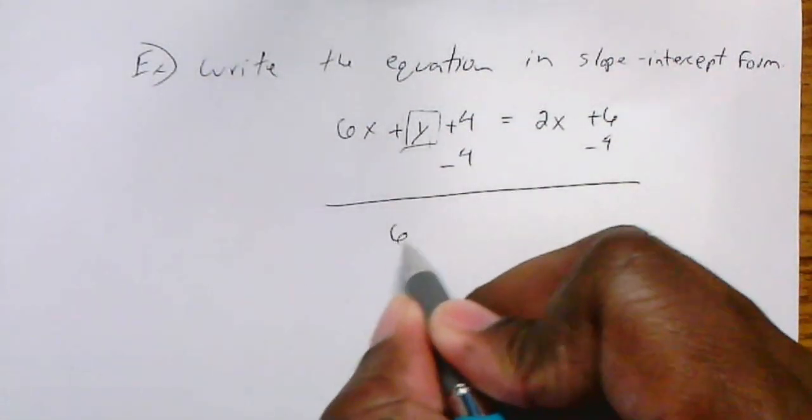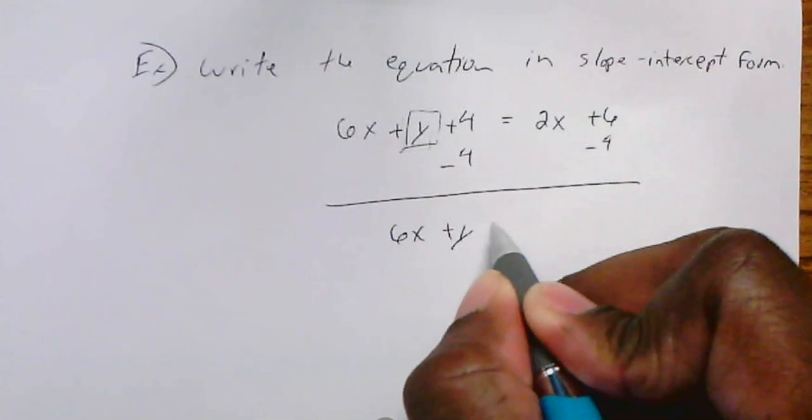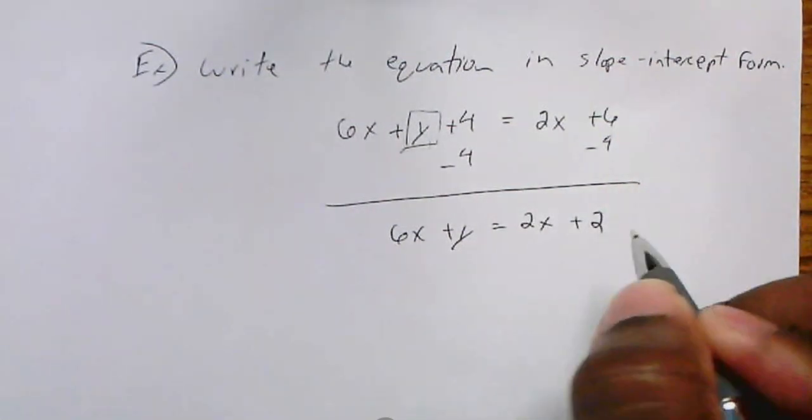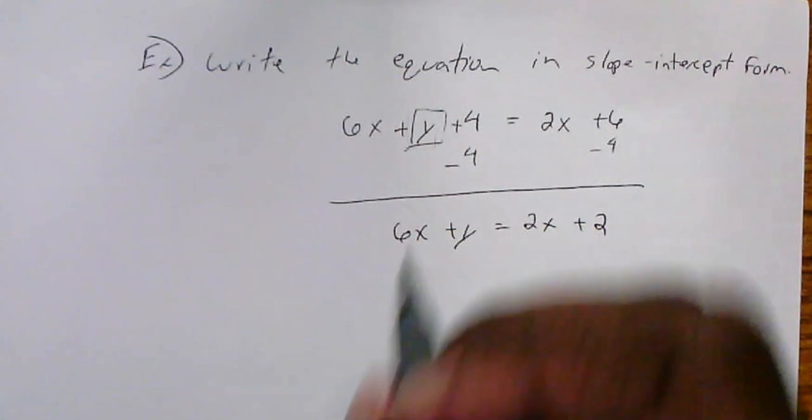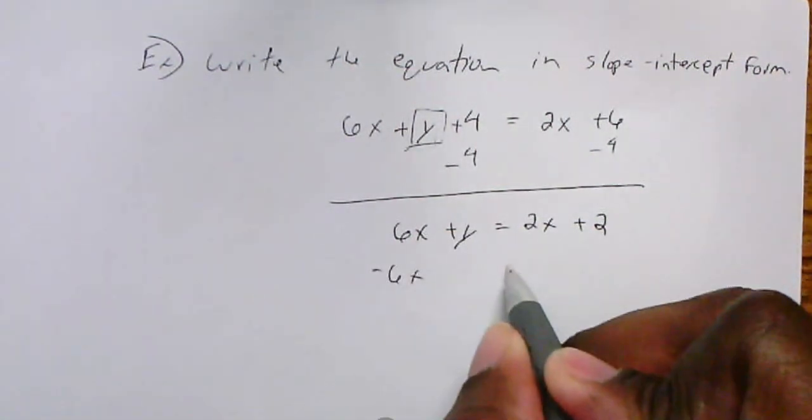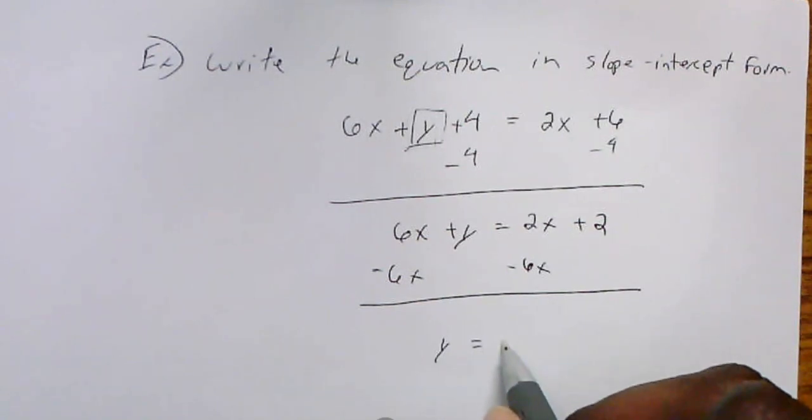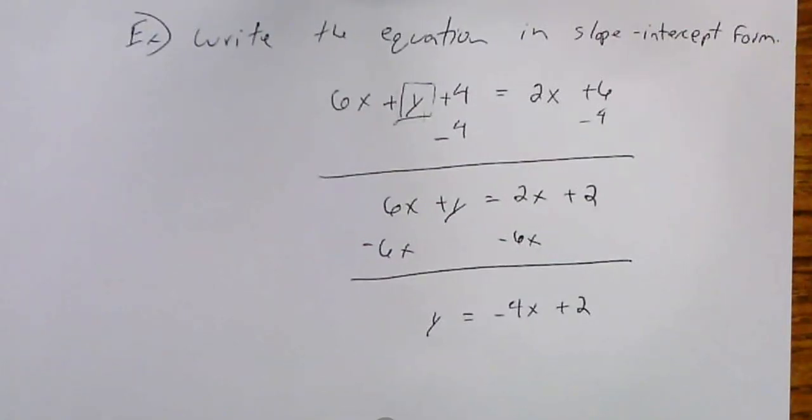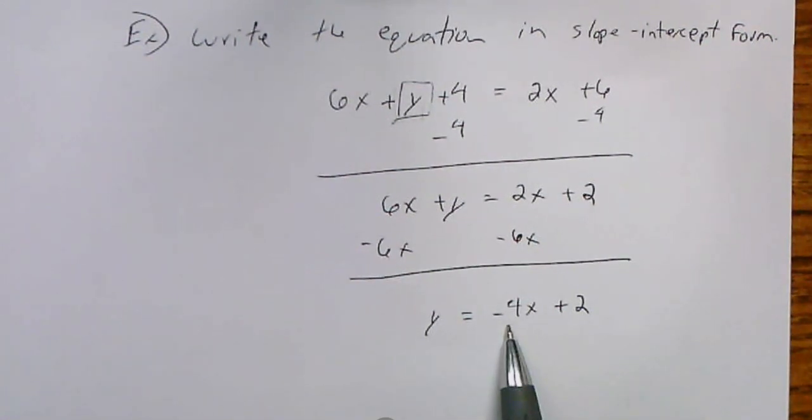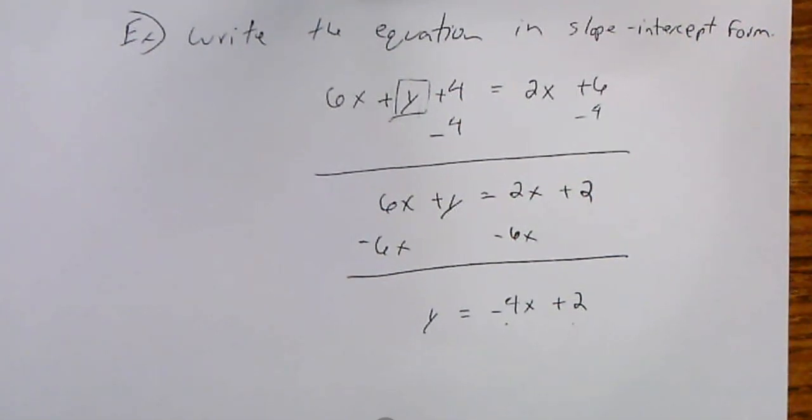This gives me 6x plus y equals 2x plus 2. I'm going to subtract 6x from both sides, which gives me y equals negative 4x plus 2. Now it's in slope-intercept form. If I want to graph it, I can see my slope is negative 4 and my y-intercept is 2. That's all I have. Good luck.